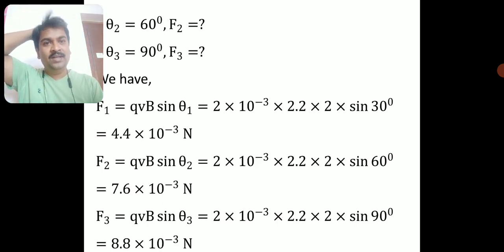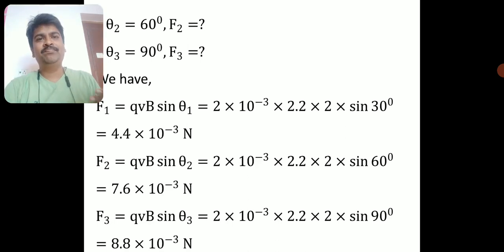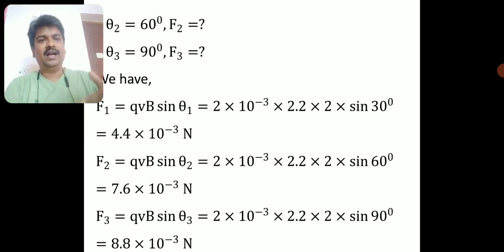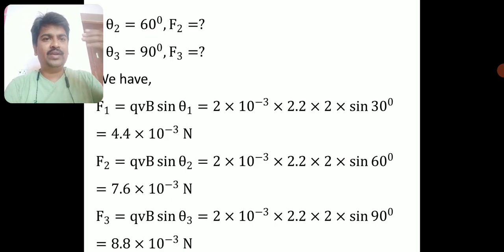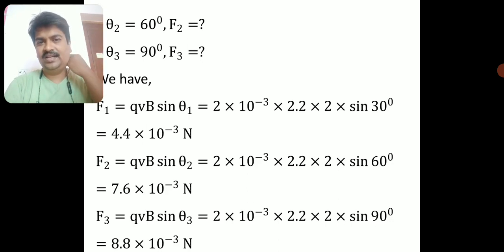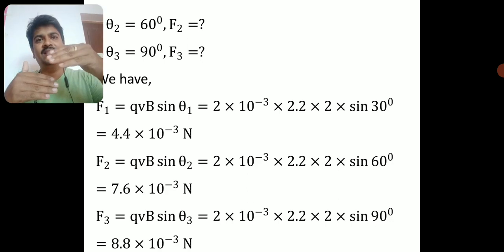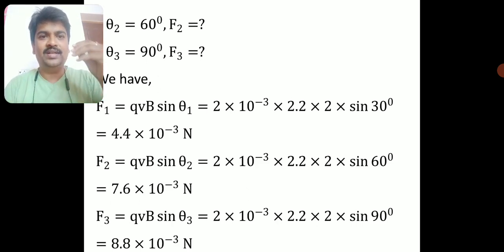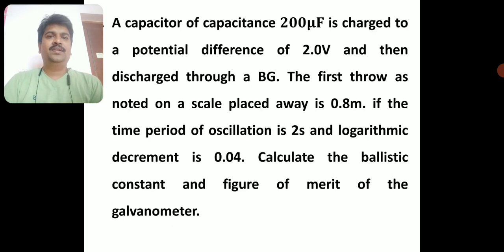Note: at 30° the force is 4.4 × 10⁻³, at 60° it is 7.6 × 10⁻³, and at 90° it is maximum at 8.8 × 10⁻³. The conclusion is: as you increase the angle between the velocity and the magnetic field, the force increases up to 90°, where it is maximum. After 90° it decreases again.